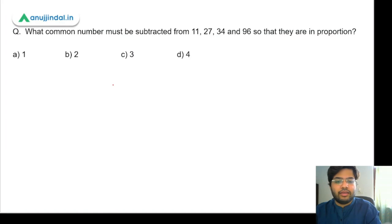Suppose you're given a question like this: What common number must be subtracted from 11, 27, 34, and 96 so that they are in proportion? Basically, these numbers are not in proportion right now, but if you subtract a common number from each of them, they'll be in proportion.